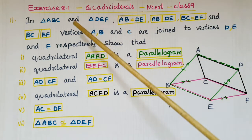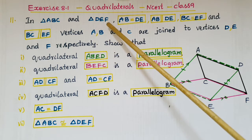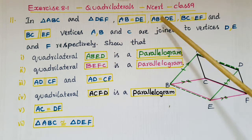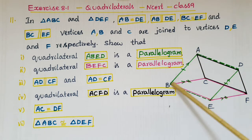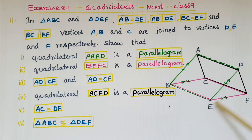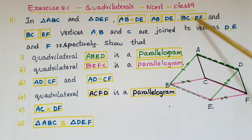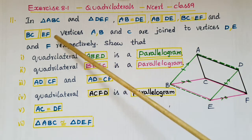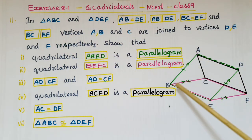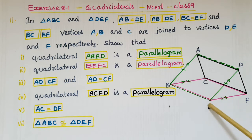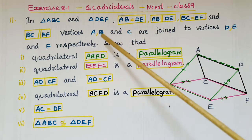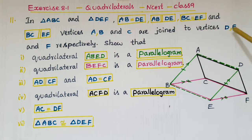In this problem, in triangle ABC and triangle DEF, AB is equal to DE and AB is parallel to DE. Here BC is equal to EF and BC is parallel to EF, and vertices A, B, C are joined to vertices D, E, F.